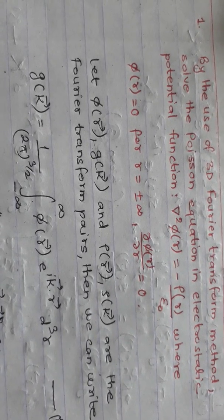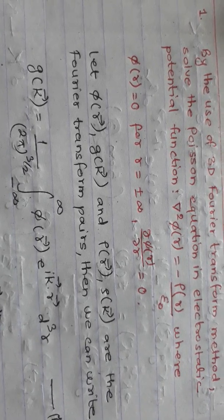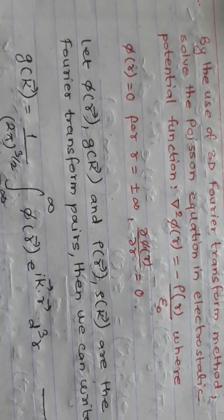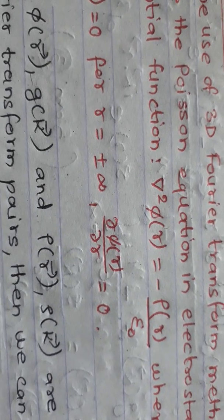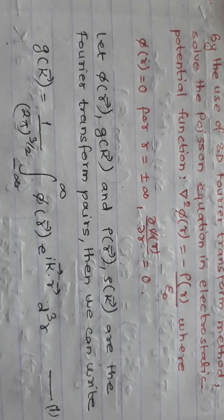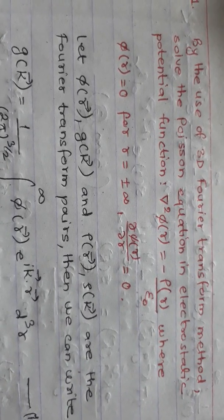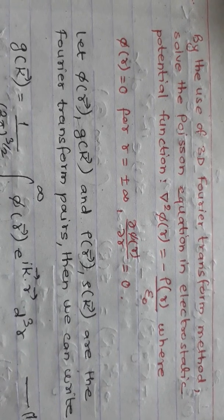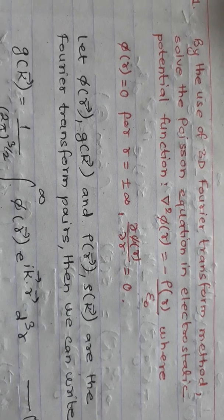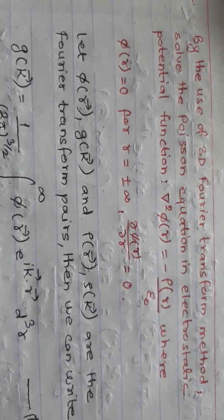Today's video is about the Fourier transform, and I'll be dealing with the Fourier transform of Poisson's equation. The given Poisson's equation has the Laplacian of phi equal to negative rho(r) over epsilon naught. By using the 3D Fourier transform method, we will solve Poisson's equation in electrostatic potential form, where del squared phi equals negative rho(r) over epsilon naught.